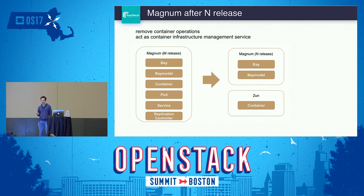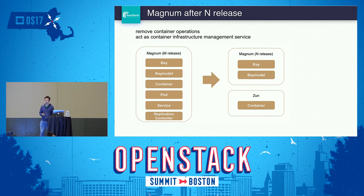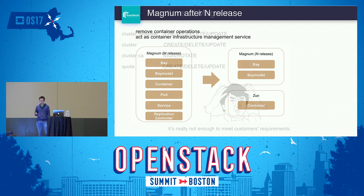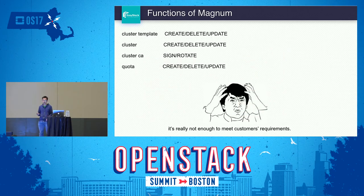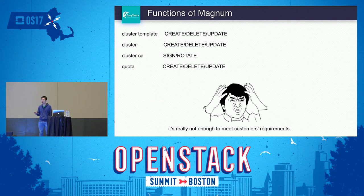In the Newton release, Magnum removed the container operations, and Magnum now acts as a container infrastructure management service. So what functions does Magnum provide now? It's really limited — just create, delete, and update operations for the cluster template, cluster, cluster certificate, and quota. That's really not enough to meet customers' requirements.